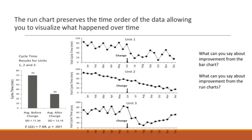We're looking at three units — unit one, unit two, unit three — and how they actually reduced cycle time, comparing the units. You can see they have very different data displays. If we were to use a bar chart showing the results for the three units combined, looking at cycle time prior to the change and after the change, we have very little insight into what the changes might have resulted in or how the data actually changed based on our improvement.